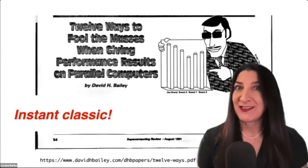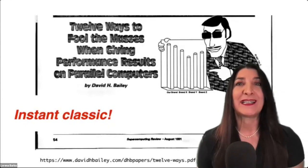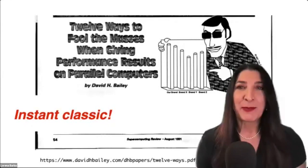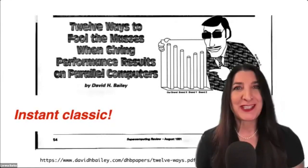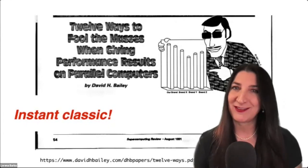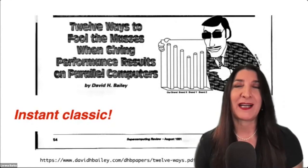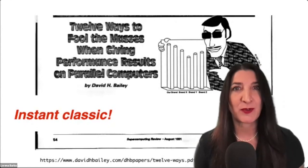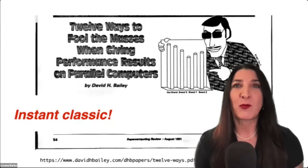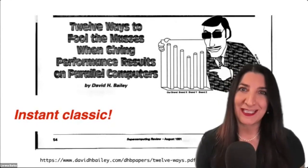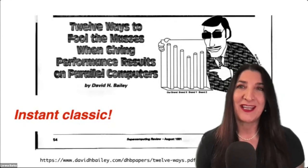We didn't have parallel standards like MPI. There wasn't even a Top 500 list at the time, but everyone was excited about the potential of these new parallel systems, and each vendor claimed that their system was the best, showing sometimes cherry-picked demos. Standard benchmarks were not yet a thing, so it was like the Wild West. David Bailey collected his chosen schemes for presenting results to artificially boost performance claims.